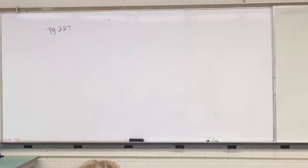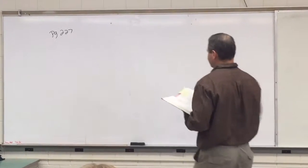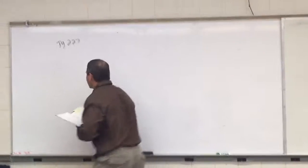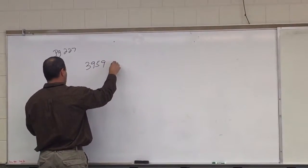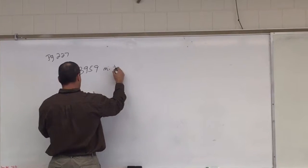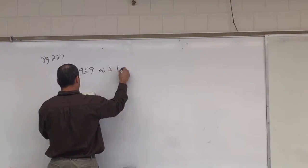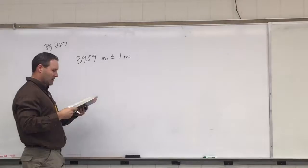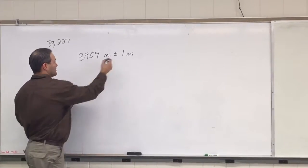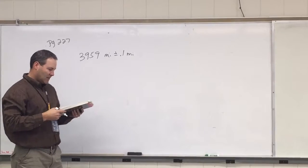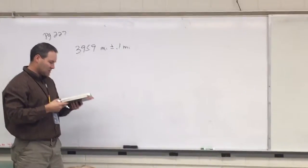It's radius to be 3,959 miles, 3,959 miles, and it says plus or minus 1 mile. What effect would the tolerance of plus or minus 0.1 mile have on our estimate of the Earth's surface area?